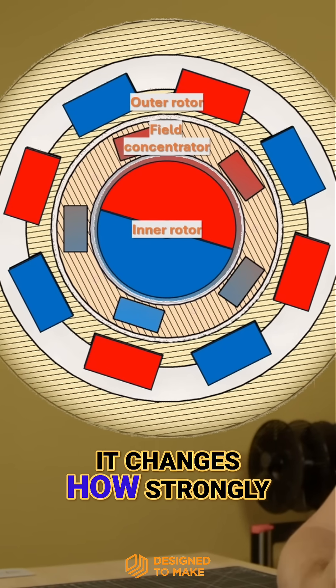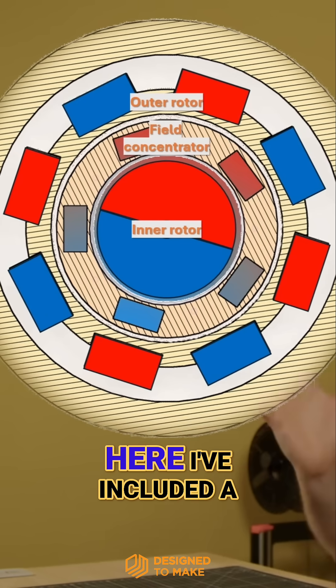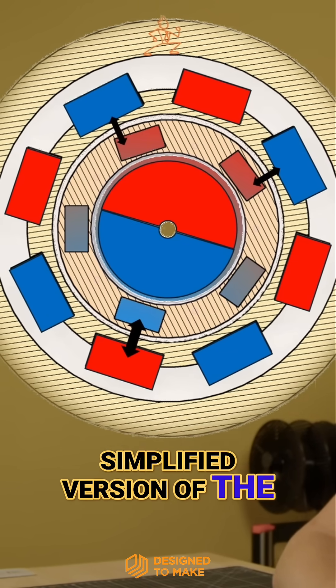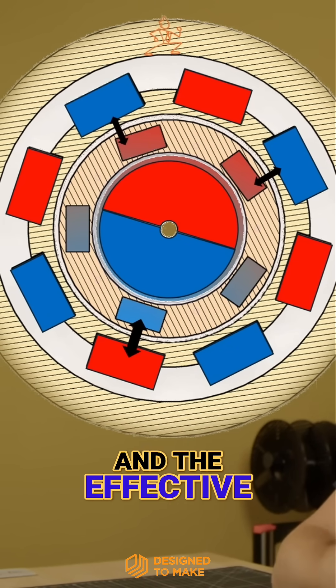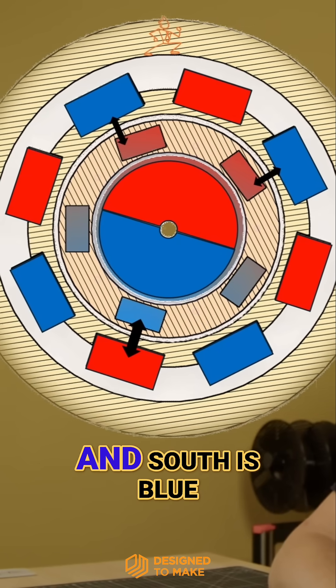The inner rotor rotates, changing how strongly the outer rotor is attracted or repelled from the adjacent concentrator nodes. Here I've included a simplified version of the magnetization of the magnets and the effective magnetization of the concentrator node, where north is red and south is blue.